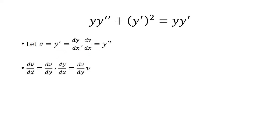Now we're going to take dv over dx, which can be rewritten as dv over dy times dy over dx. I can do that because the dy's cancel and you're left with dv over dx. Now dv over dy is just dv over dy, and dy over dx is v — so I can replace dy over dx with v.